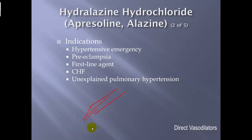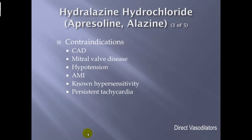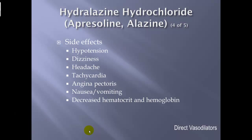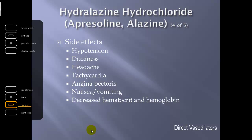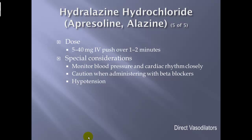Additional contraindications for Hydralazine: coronary artery disease, mitral valve disease, hypotension, acute myocardial infarction, known hypersensitivity, and persistent tachycardia. Side effects: hypotension, dizziness, headache, tachycardia, angina pectoris, nausea and vomiting, and decreased hematocrit and hemoglobin. Dose: 5 to 40 milligrams IV push over 1 to 2 minutes. Special considerations: monitor blood pressure and cardiac rhythm closely; use caution with beta blockers, because combining adjustment of peripheral vascular resistance with adjustments to heart rate and contractility can cause excessive hypotension.